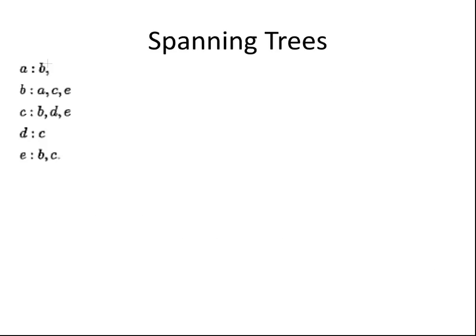Let's draw the graph G. First off we have vertex A, which I'm going to put here. That's connected to B, which I'm going to put over here, and we're going to connect them. So that's A finished. B is connected to A, C and E. I'm going to put C down here and I'm going to put E over here.